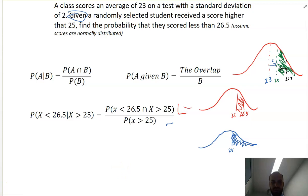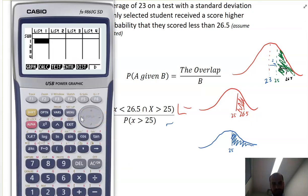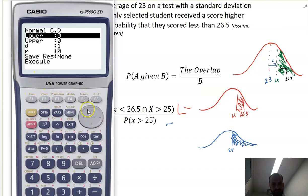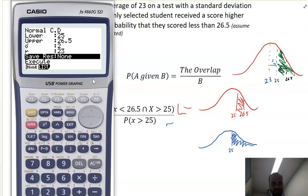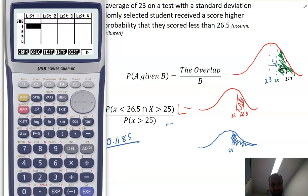It's just getting your calculator out. Go into stat mode. Distribution. Normal distribution. NCD. Alright. So first one I'm going to do is this red one here. Lower 25. Upper 26.5. We had a standard deviation of 2 and a mean of 23. And I can do that. And I get 0.1185. Just drawing that in there.